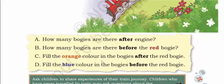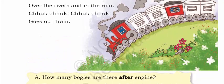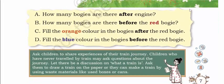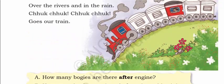Fill the orange color in the bogies after the red bogie — after the red bogie means behind it. These 2 bogies should be colored orange. Fill the blue color in the bogies before the red bogie — before the red bogie means these 2 in front. These 2 should be colored blue, because they are before the red bogie.